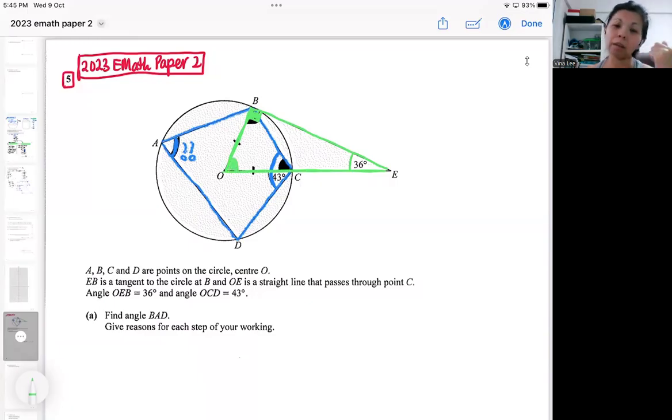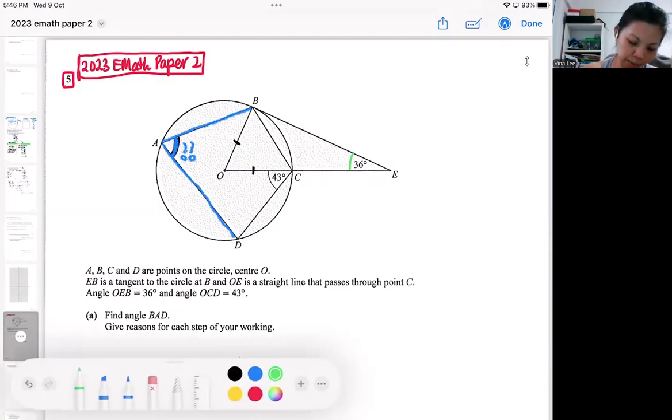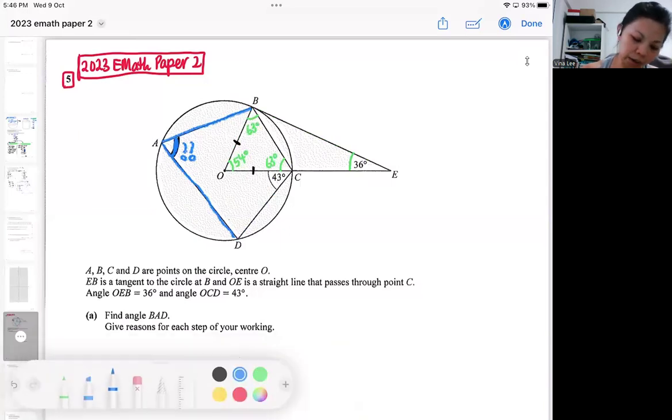If you use angle sum of triangle in the green one, you can find DOC. I'm not going to show you the calculation, you can look at my working. So after I get 54, my isosceles triangle is more or less solved. If I apply my angle sum of triangle, my isosceles triangle, I'll get 63 here. Then I can successfully apply my angle in the opposite segment.